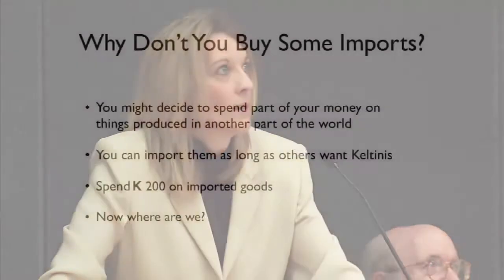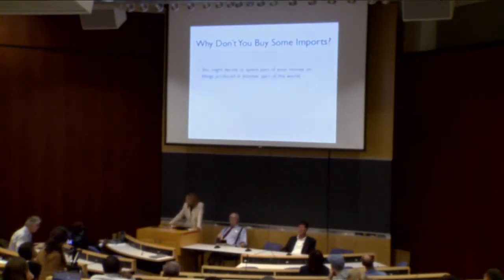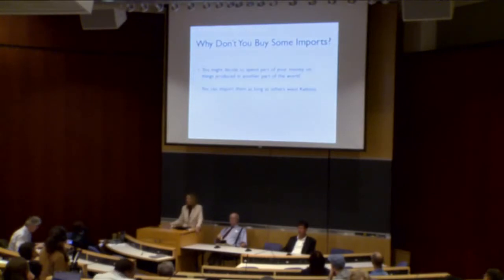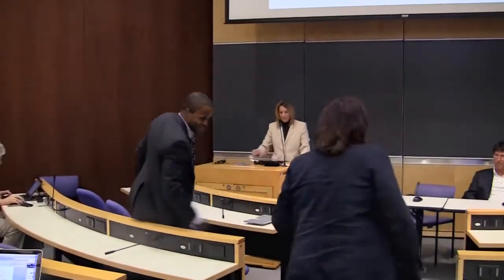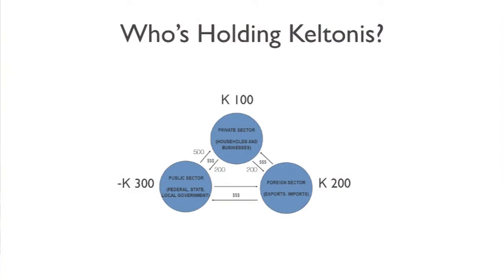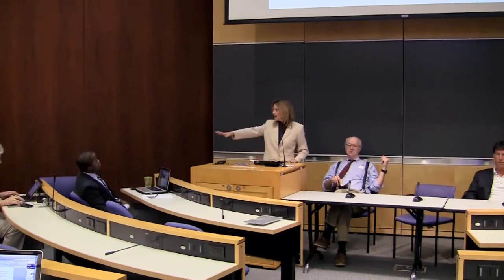Now let's say you buy some imports — this is the foreign sector. You might decide to spend part of your income buying goods and services produced abroad, as long as they want keltones, which they'll want as long as you produce something of value they'll want to exchange keltones for later. Let's say you spend 200 buying great things from the foreign lands. Now we have three sectors — the government sector, the domestic private sector, and the foreign sector. You've got 100, they've got 200, and I have the minus 300. My deficit is the non-government surplus.